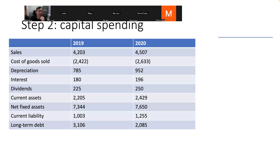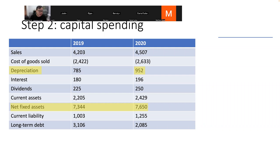Step two is to calculate net capital spending, which is related to long-term fixed assets and depreciation. Capital spending means spending money to invest in long-term assets. In any year, you could acquire new assets and also retire or dispose of older ones, so net capital spending can be either positive or negative.